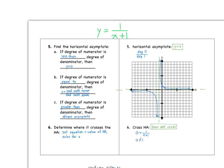Now let's talk about horizontal asymptotes. There are three scenarios based on comparing the degrees of the numerator and denominator. Scenario A: if the degree of the numerator is less than the degree of the denominator, the horizontal asymptote is y = 0. Scenario B: if the degrees are equal, the horizontal asymptote is y = (leading coefficient of numerator) / (leading coefficient of denominator). Scenario C: if the numerator's degree is greater, we get an oblique or slant asymptote — but in this class, we'll only focus on scenarios A and B.